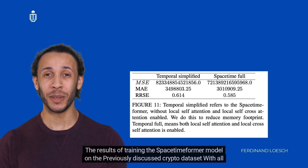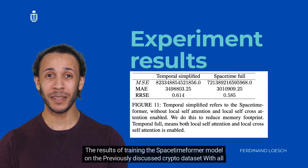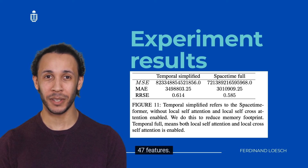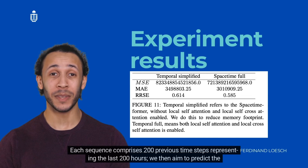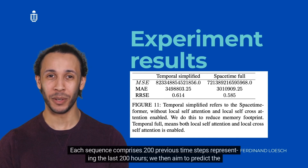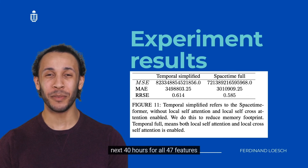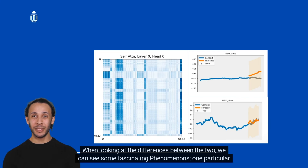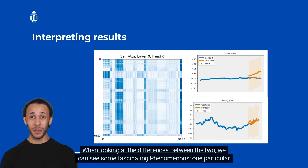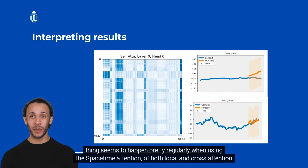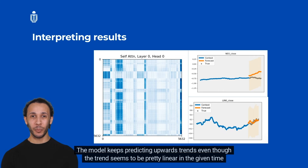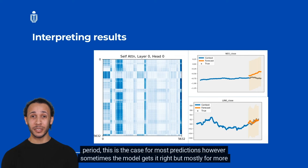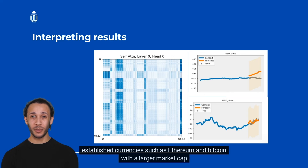The Spacetime Former was trained on the crypto dataset with all 47 features. Each sequence comprises 200 previous time steps representing the last 200 hours, and the model aims to predict the next 40 hours for all 47 features. When comparing configurations, one notable phenomenon occurs: with both local and cross attention enabled, the model keeps predicting upward trends even when the actual trend is relatively linear. This happens for most predictions, though the model occasionally gets it right — particularly for more established currencies like Ethereum and Bitcoin with larger market caps.